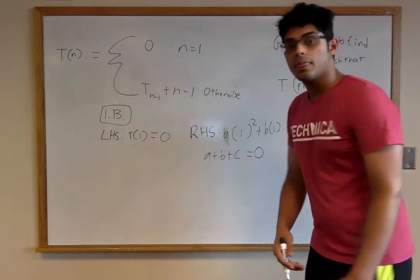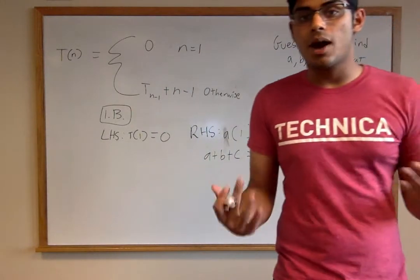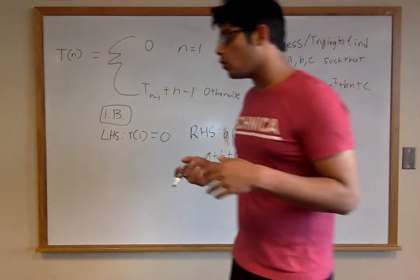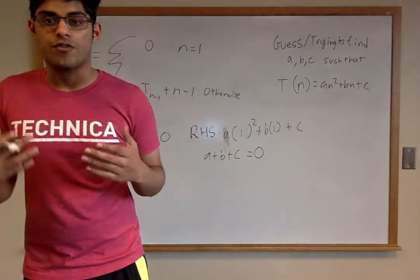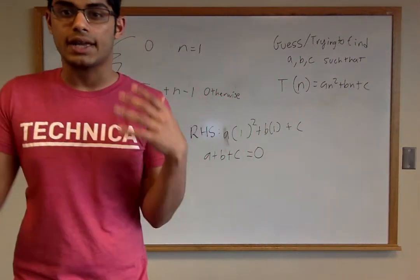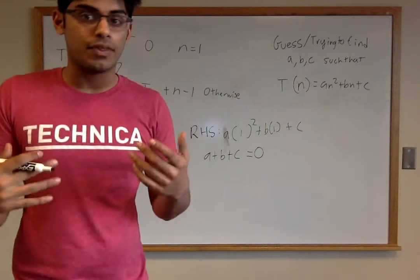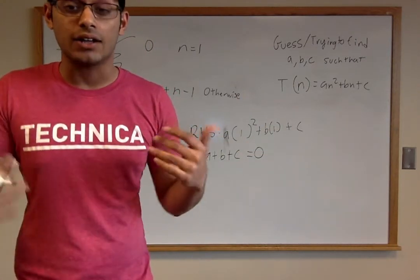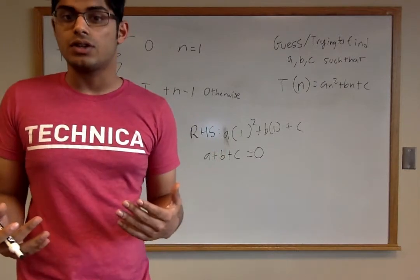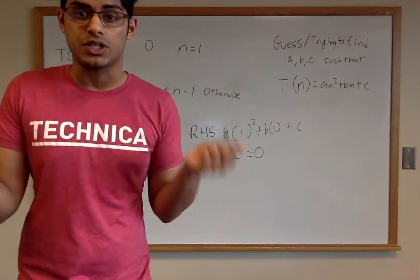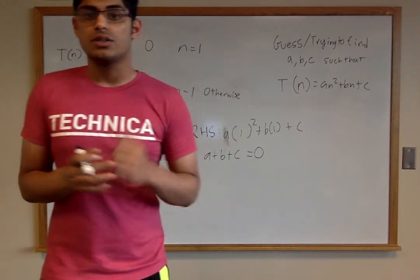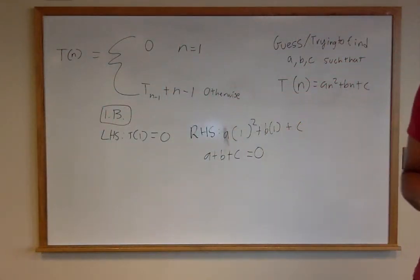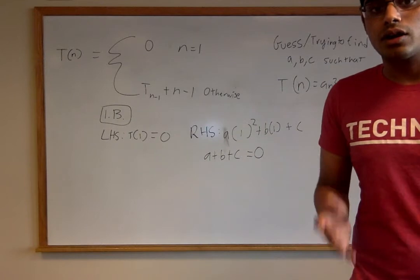Setting the left-hand side and right-hand side equal — because we're doing an inductive proof and we're trying to prove that the inductive base holds — we find the relationship: a + b + c = 0. Keep in mind this is constructive induction, so we're not getting a proof just yet. We're assuming the guess is correct and trying to find values for a, b, and c. We'll use this equation in a bit, so sit tight.